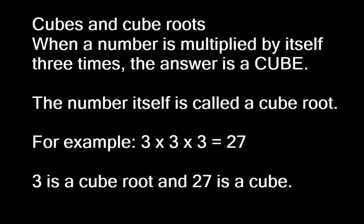Now with cubes and cube roots. When a number is multiplied by itself 3 times, the answer is a cube. The number itself is called a cube root. For example, 3 times 3 times 3 equals 27. 3 is called the cube root, and 27 is the cube.